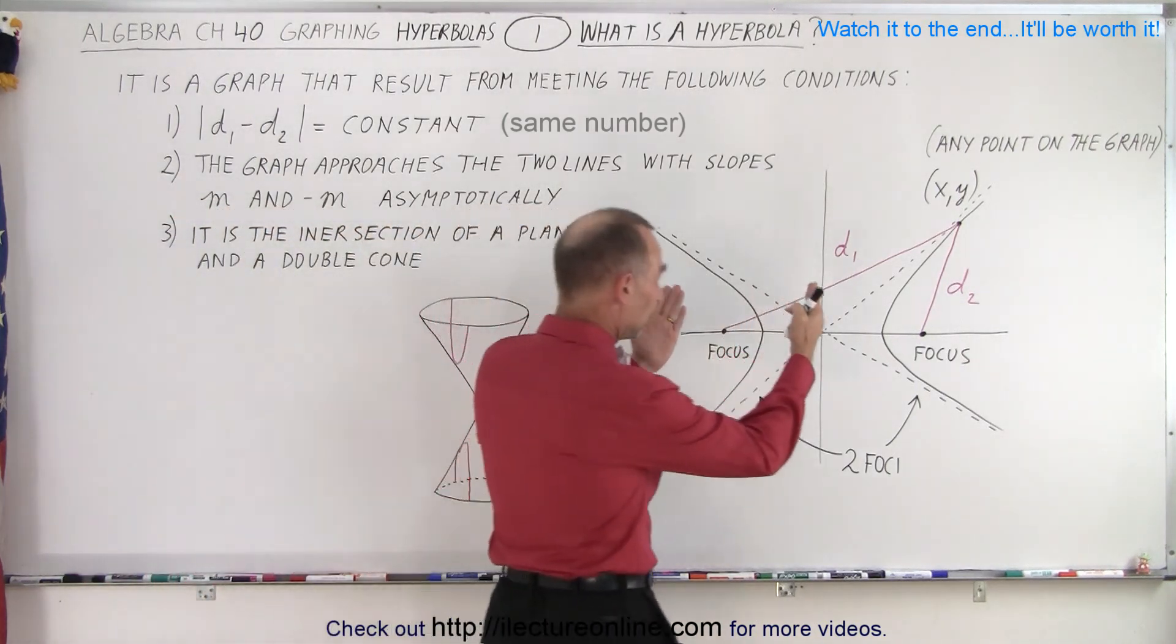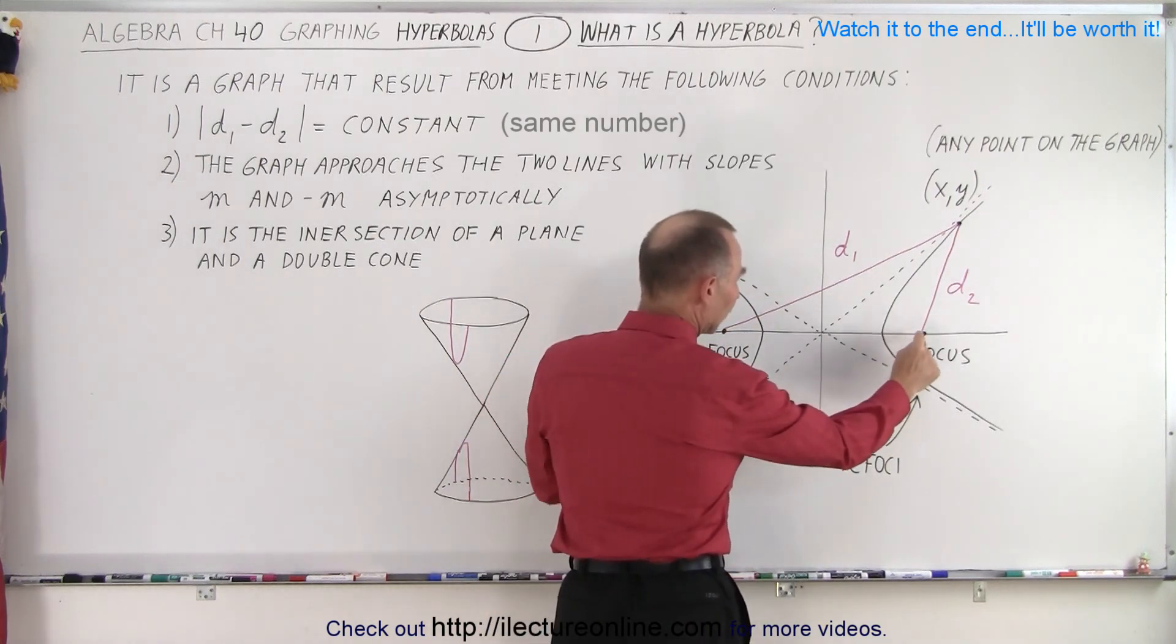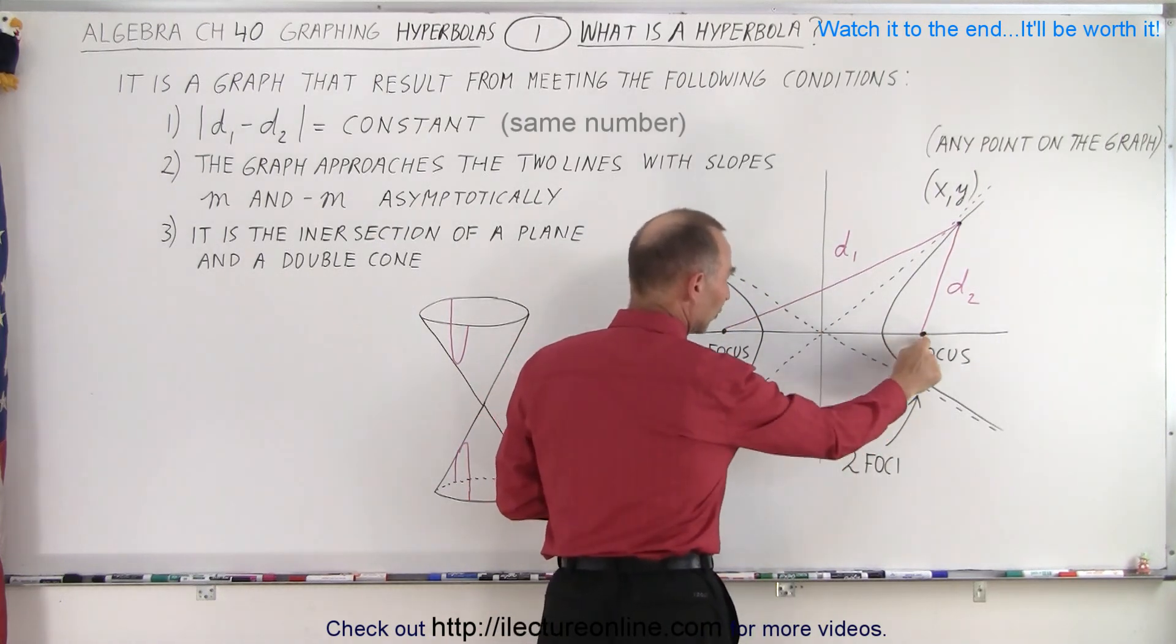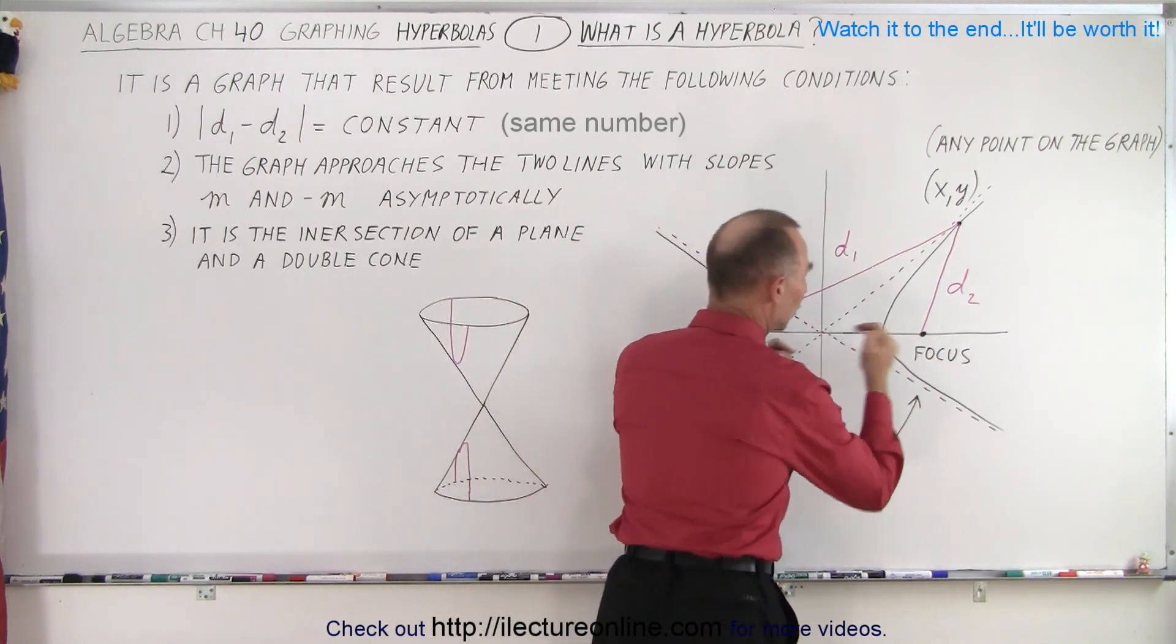Well the first one is kind of an interesting one. So here we have a hyperbola drawn on the board. Notice I put down the two foci, one focus on one side and on the other side. They're equidistant from the origin.